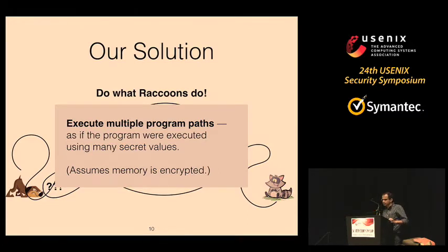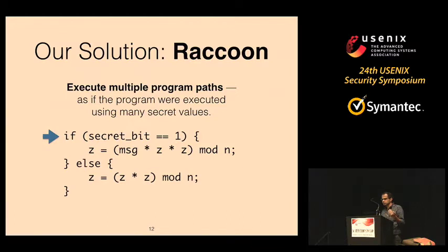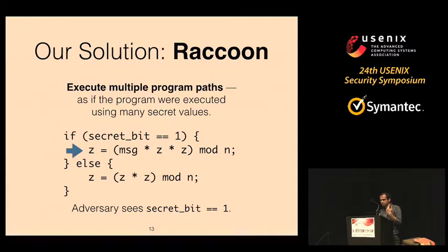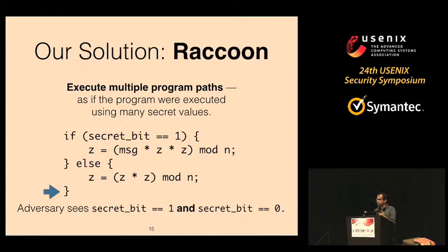To make that idea concrete: Raccoon makes your program first evaluate the branch predicate, and then irrespective of the predicate's value, it always forces execution to execute the then branch first, then forces execution of the else branch as well. From the adversary's point of view, for a single dynamic instance of this branch, both the true branch and the false branch have been executed. So at the source level, it does not leak information. This is the key idea behind Raccoon, though there are many details about how to make it efficient.